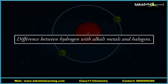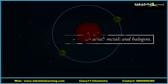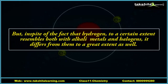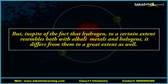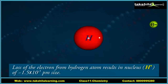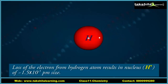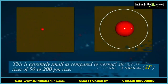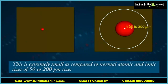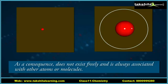Despite resembling both alkali metals and halogens to a certain extent, hydrogen differs from them greatly. Loss of an electron from hydrogen results in a nucleus H⁺ of nearly 1.5×10⁻³ picometer in size — extremely small compared to normal atomic and ionic sizes of 50 to 200 pm. As a consequence, H⁺ does not exist freely and is always associated with other atoms or molecules.